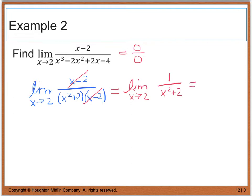Now when I do direct substitution, I end up with 1 divided by 2 squared, which is 4, plus 2, or I end up with 1 sixth, which would be my final answer, or the limit of this function.